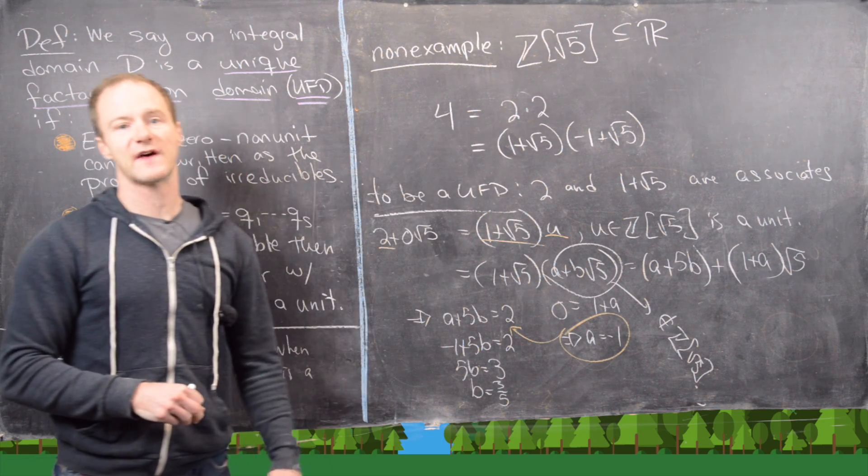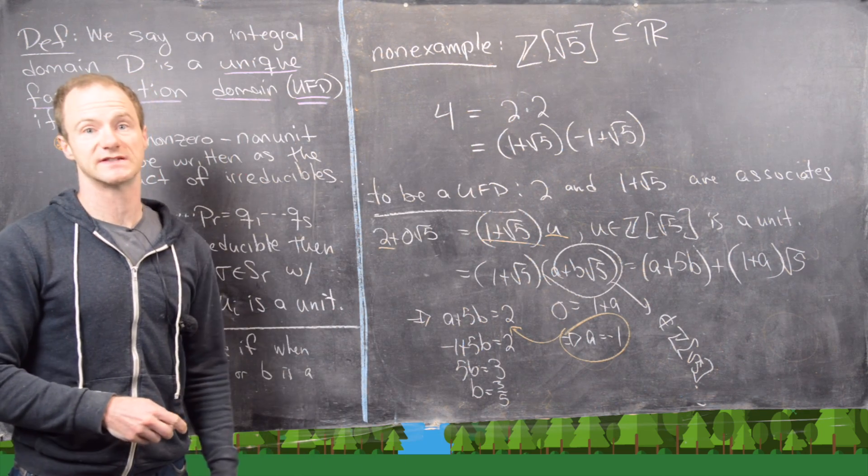Which means there is no such factorization of the number 2 into 1 plus root 5 times a unit. So we have a non-unique factorization in this ring. Okay, that's a good place to stop.